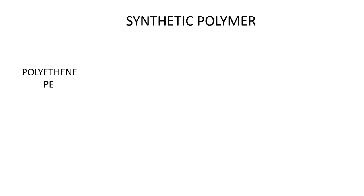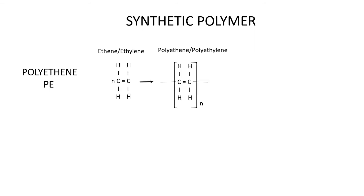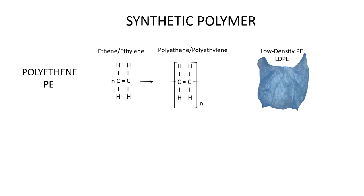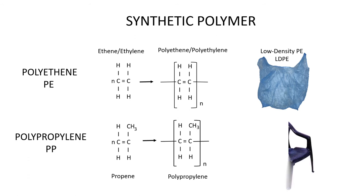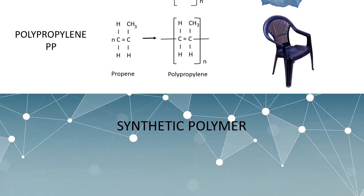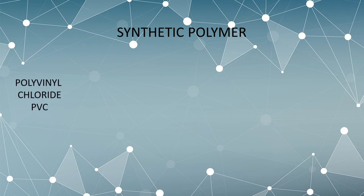Moving on, let's look at synthetic polymers and their examples. Polyethene (PE) is made up of monomers known as ethene. Plastic bags used during groceries are made of low density polyethene (LDPE). Propene is the monomer which makes polypropylene, also used in making plastic containers and plastic furniture.